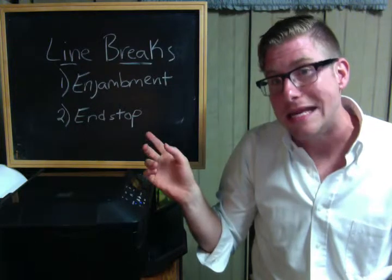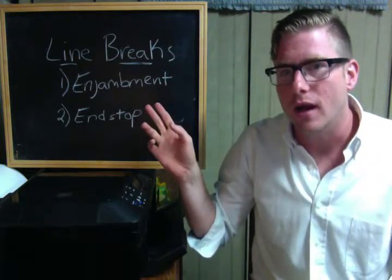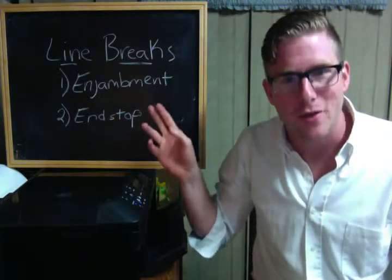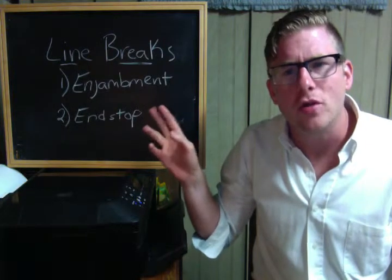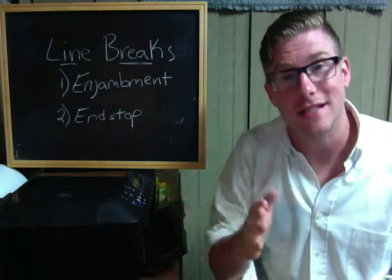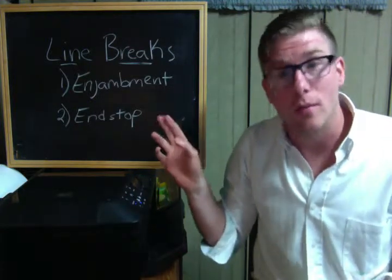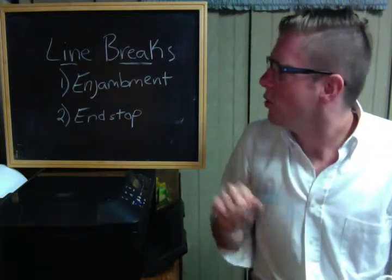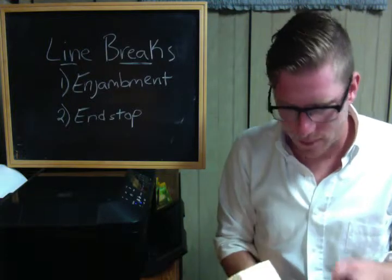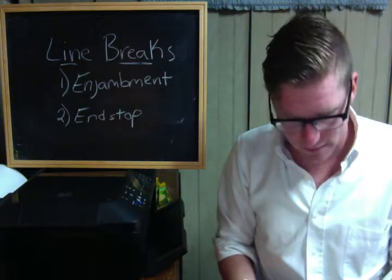There is enjambment and there is the end stop. Incidentally, these things exist for metered poetry as well — if you look at the old poems, you'll see the same thing going on. But they don't acquire the same importance in metered poetry, because in those cases you know when the line is going to end, dictated by the number of syllables. But for free verse poetry, this is very important.